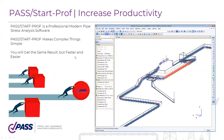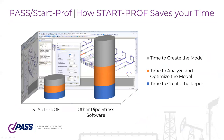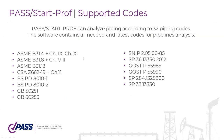PASS StartProf software is very easy to use, so you will save your time because you will achieve results much easier and faster. Here are the codes used for pipeline analysis: ASME B31.4, B31.8, B31.12, the Canadian code, British code, two Chinese codes, and several Russian codes for pipelines.